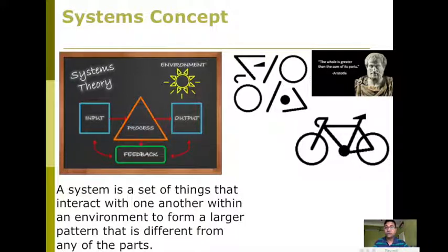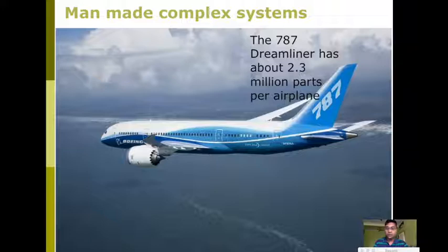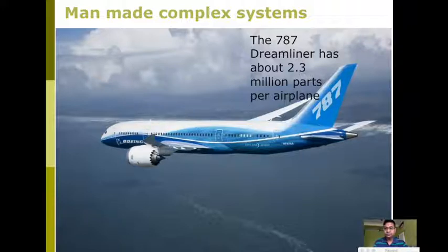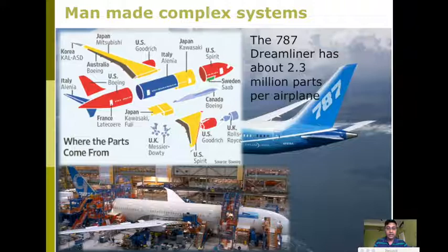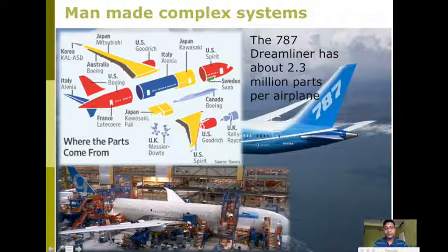The concept of systems is actually not new — it is as old as the days of Aristotle, who said that the whole is greater than the sum of its parts. Now let us take another example: perhaps all of you know this is one of the most advanced man-made complex systems, the Boeing 787 Dreamliner. It has near about 2.3 million individual parts, and most of these parts are made in different countries spread all across the world. These parts are assembled in a factory and then we get the finest machine.